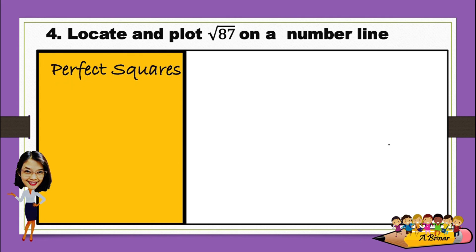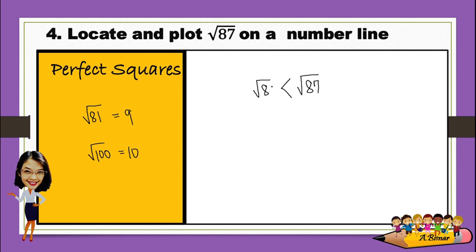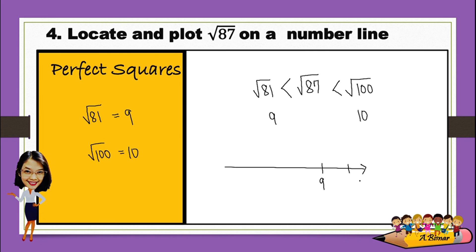And for the last one, we have the square root of 87. We have the square root of 81, which is 9, and the square root of 100, which is 10. Which means the square root of 87 is between the square root of 81 and the square root of 100 — that is, somewhere between 9 and 10.